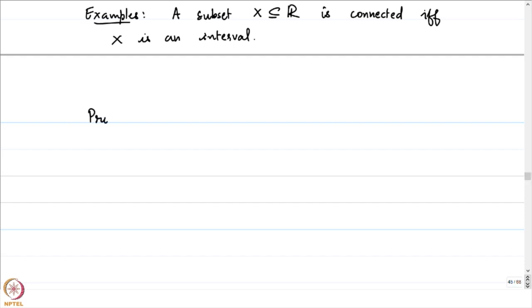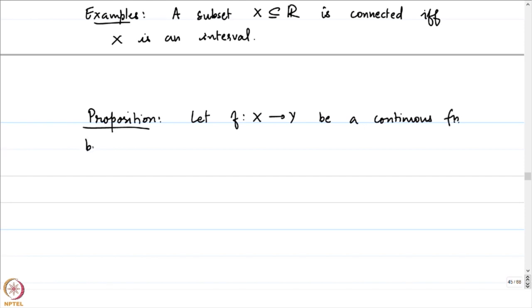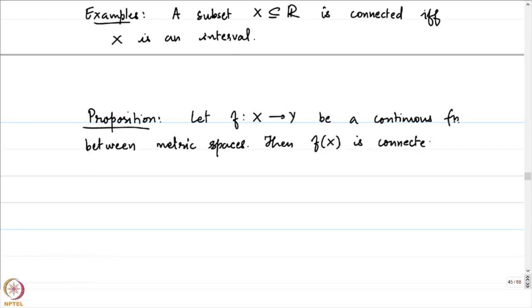Before that, let me prove a proposition. The proposition tells us how connectedness behaves under continuous maps. Let f from X to Y be a continuous function between metric spaces. Then f(X) — the image of X — is connected if X is connected. Continuous functions preserve the notion of connectedness.